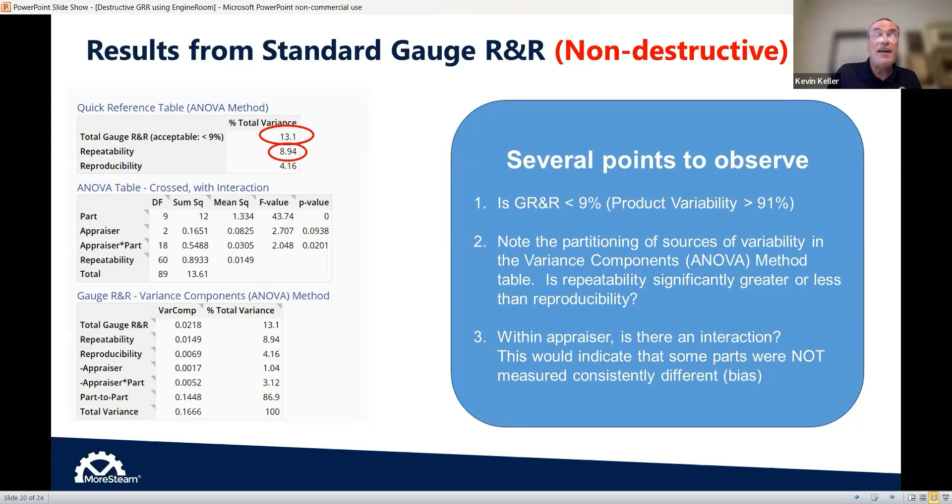And so then right underneath that, it gives me repeatability and reproducibility. And these are additives. So if you remember the formula I gave you earlier, it's literally that plus that. And so I can see repeatability is twice as large as reproducibility. But I've got to look at one more